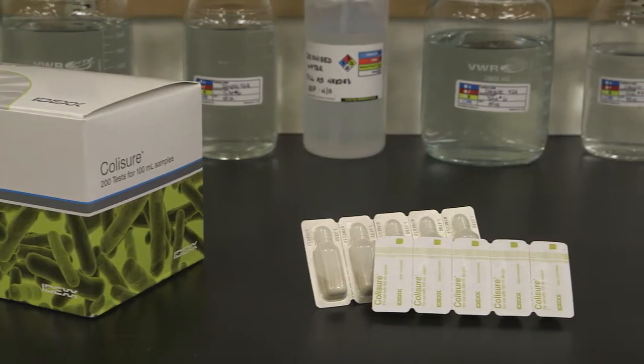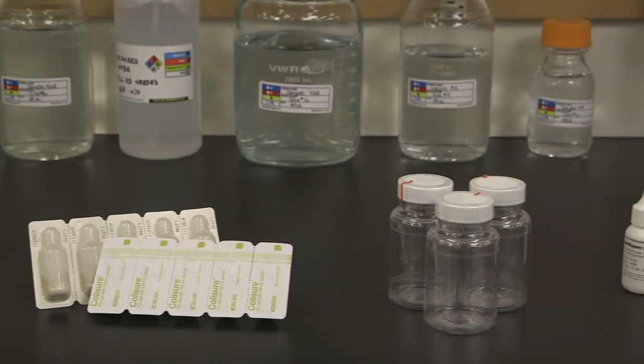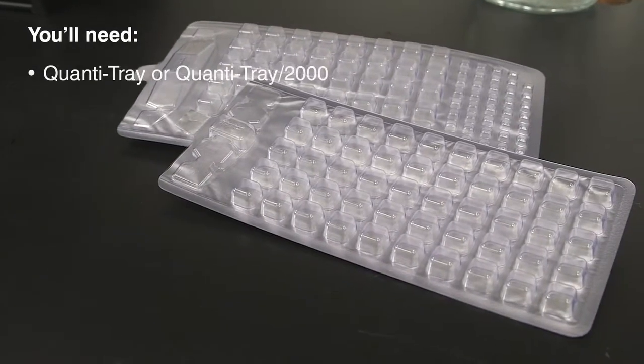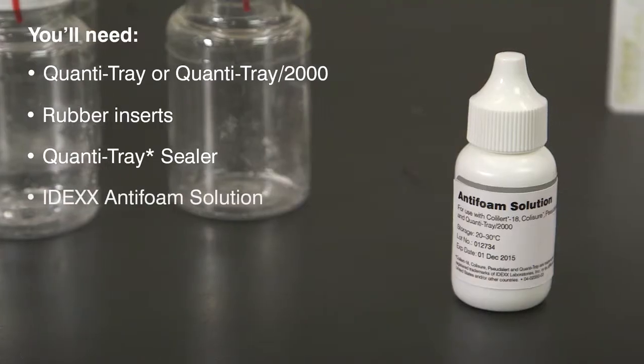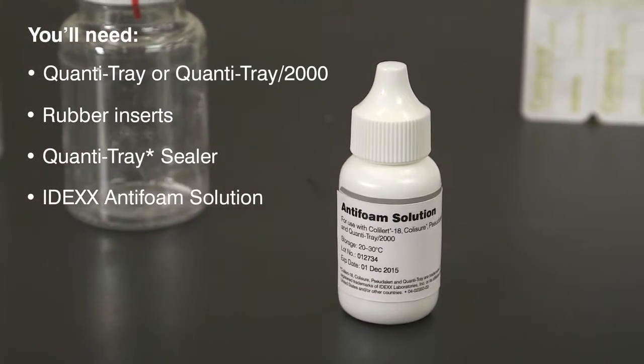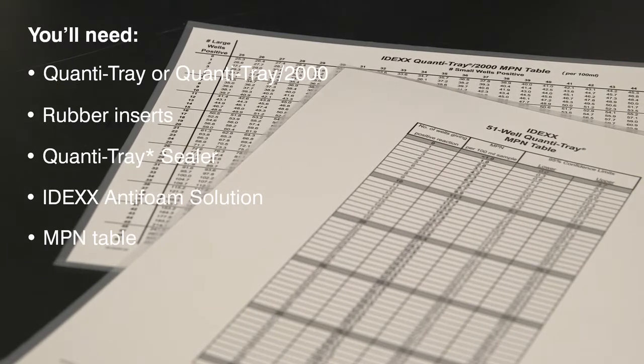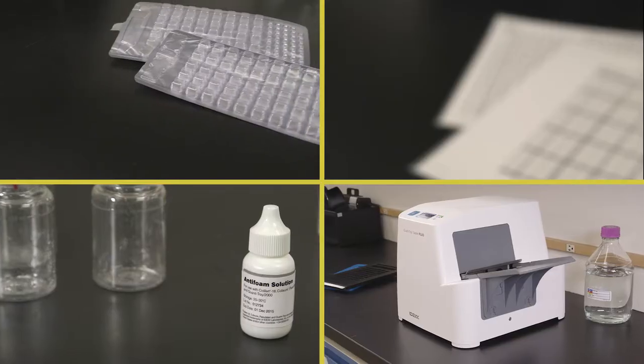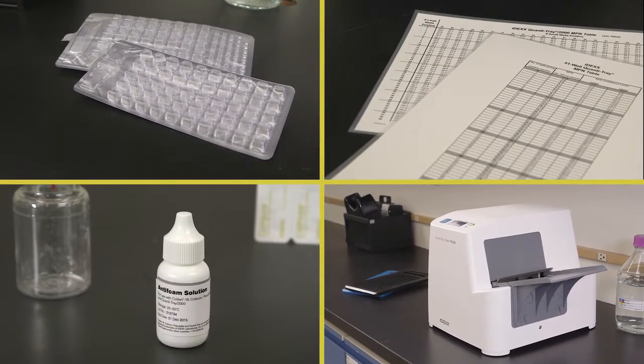In addition to the materials used for presence-absence detection, for quantification you will need a QuantaTray or QuantaTray 2000, QuantaTray rubber inserts, a QuantaTray sealer, IDEXX anti-foam solution, and the included most probable number table or the IDEXX automated MPN generator program found at IDEXX.com. All of these items are included in the QuantaTray system and are available from IDEXX.